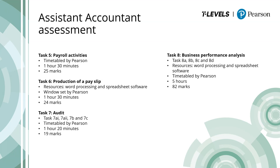In Task 7, students will consider auditing requirements and actions in response to the set scenario, assessing the audit skills and content in performance outcome 4. The task is split into four parts: 7A1, 7A2, 7B and 7C. A resource document and digital answer booklet will be provided, with work completed using word processing software. The task is worth 19 marks and has a duration of 1 hour 20 minutes.